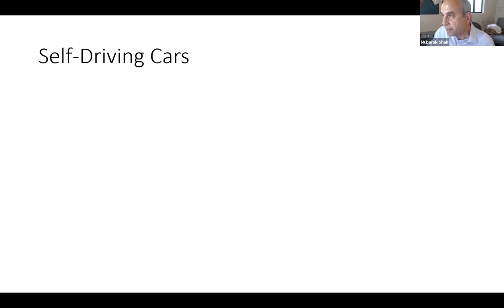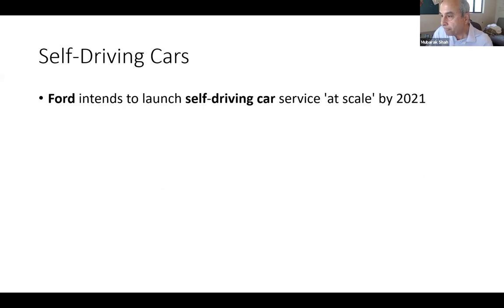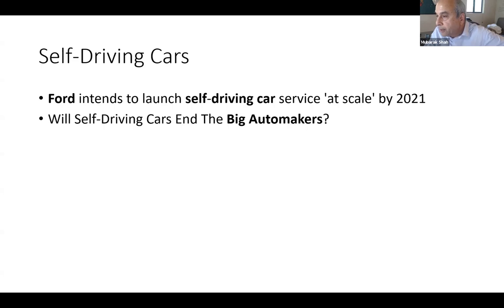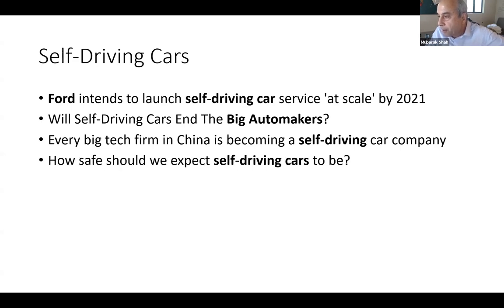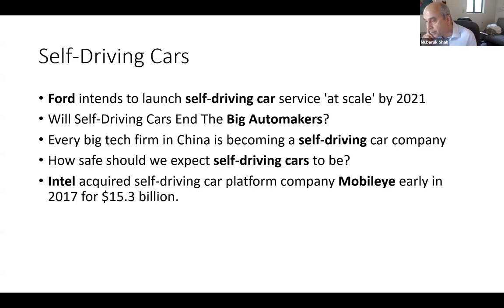All these companies are investing a lot of money in computer vision and self-driving cars. Ford is planning to release something soon. Almost every company in China is doing self-driving cars. Tesla has a computer vision system called Mobileye, from a company in Israel by famous computer vision professor Amnon Shashua. Intel bought his company for $15 billion — that tells you how important computer vision is.